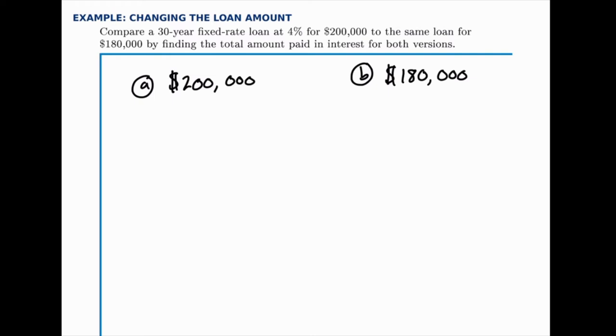I'll just say the payment for the first one works out to $954.83. The payment for the second one works out to $859.35.